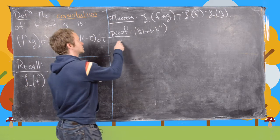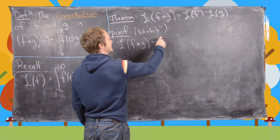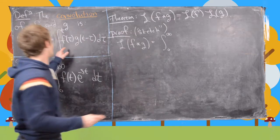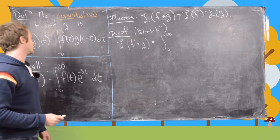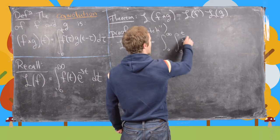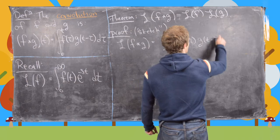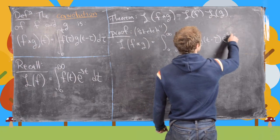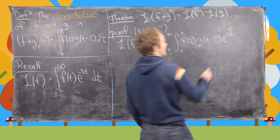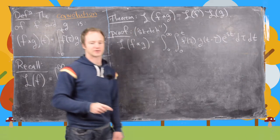Using the definition of a Laplace transform, the Laplace transform of f star g is the integral from zero to infinity of the integral from zero to t of f of tau times g of t minus tau, with e to the minus st — where d tau is the inner integral and dt is the outer integral.